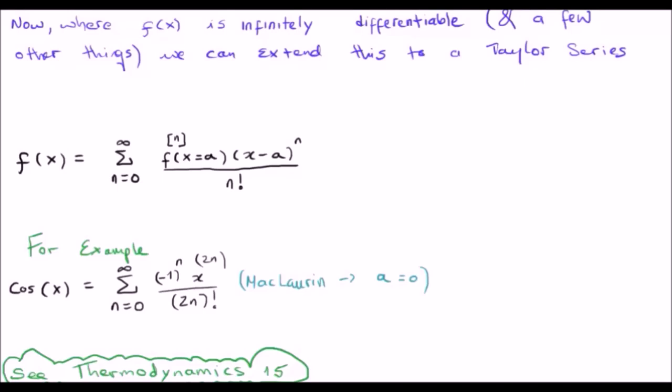For example, if you want to see the McLaren expansion of cosine of x, look at thermodynamics 15, and you'll find this particular expression. The point is we can use power series in order to represent a function at a particular point.